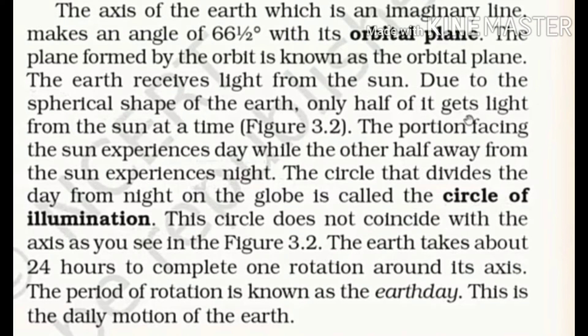The light falls on one side, so that half of the earth facing the sun experiences day, while the other half away from the sun experiences night. Because the earth's shape is a sphere, the part facing the sun is in day and the other part where sunlight does not reach is in night. The circle that divides the day from the night on the globe is called the circle of illumination.